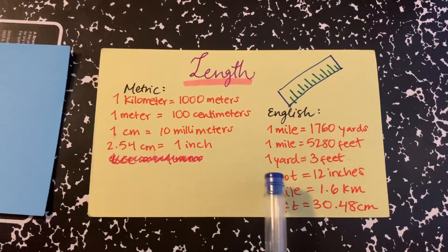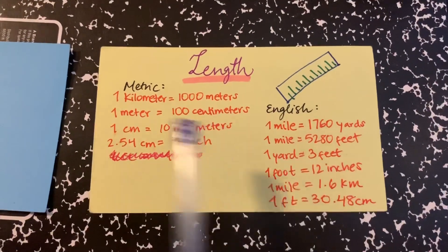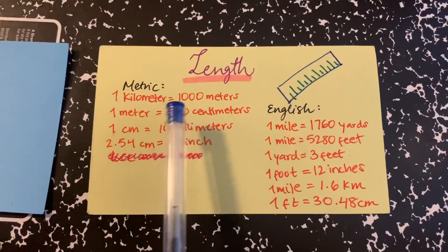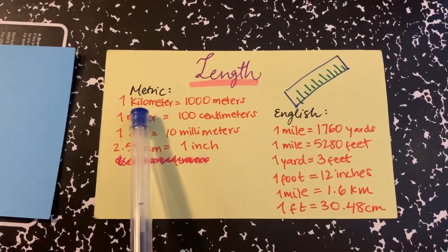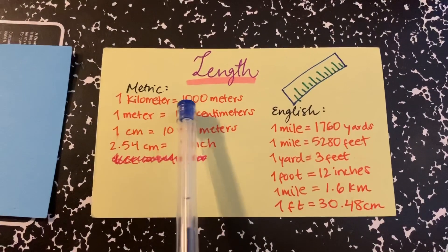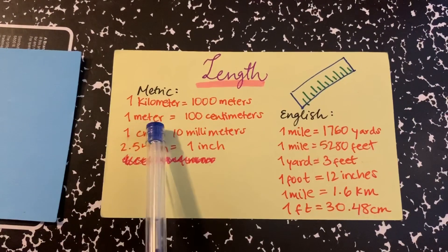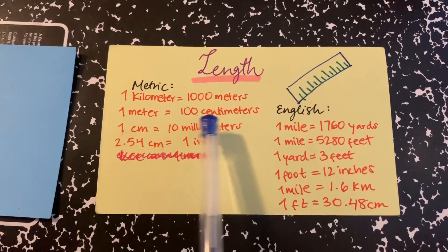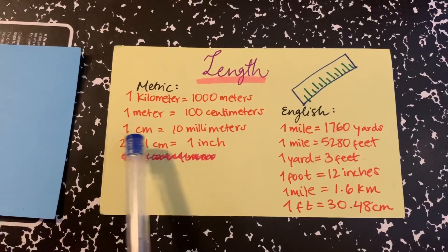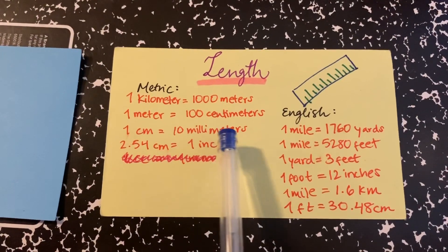The first one is 1 kilometer is equal to 1,000 meters. Remember I told you the keyword kilo means 1,000 times bigger, so there it is. 1 meter is equal to 100 centimeters. 1 centimeter is equal to 10 millimeters.